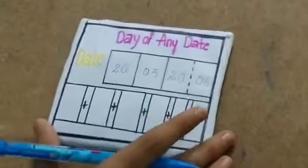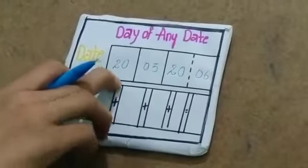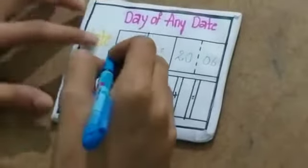Firstly, you have to select the date, year, and month. I have selected the date, month, and year. First, you have to write the same thing: the day, 20, and the month.